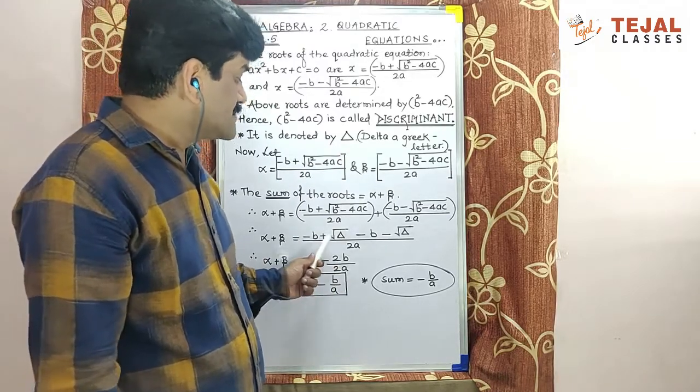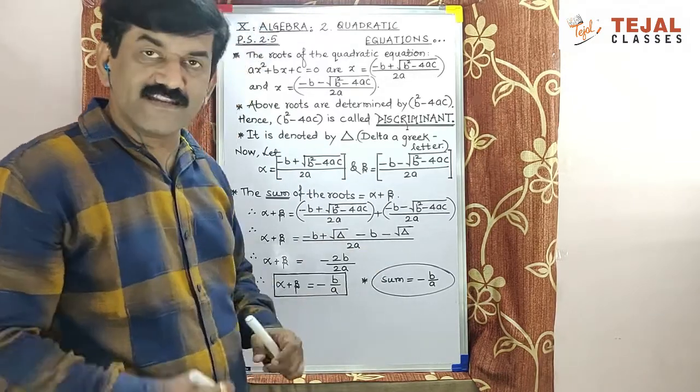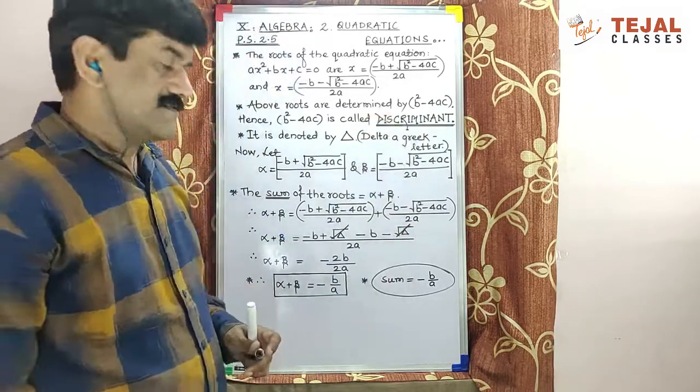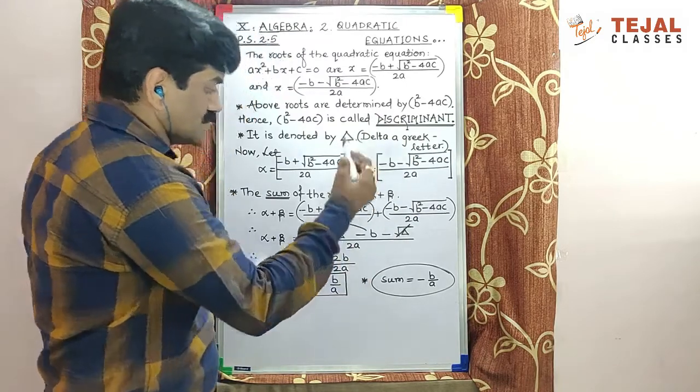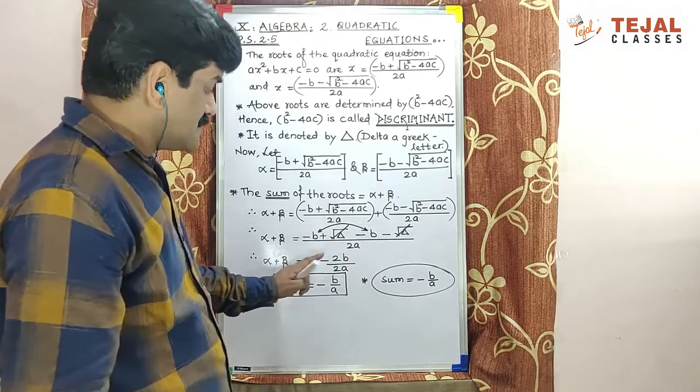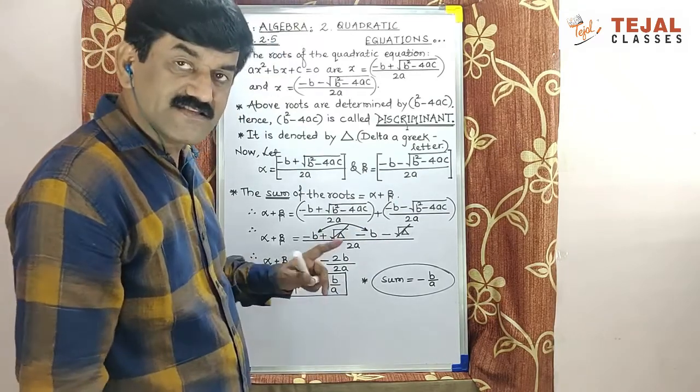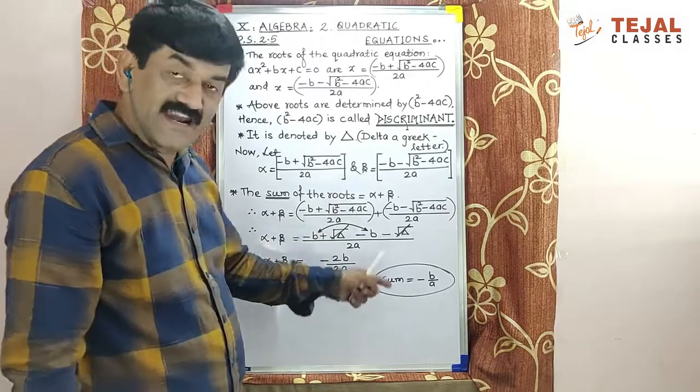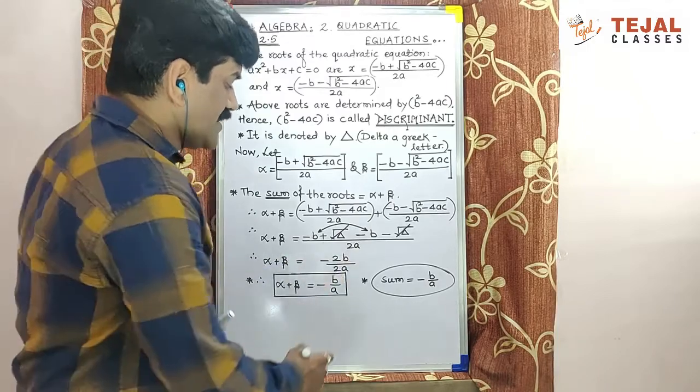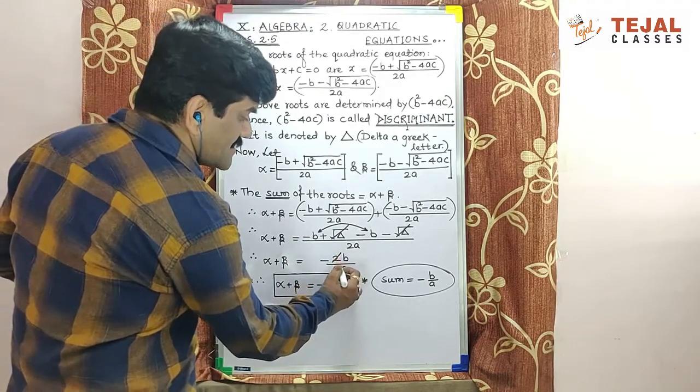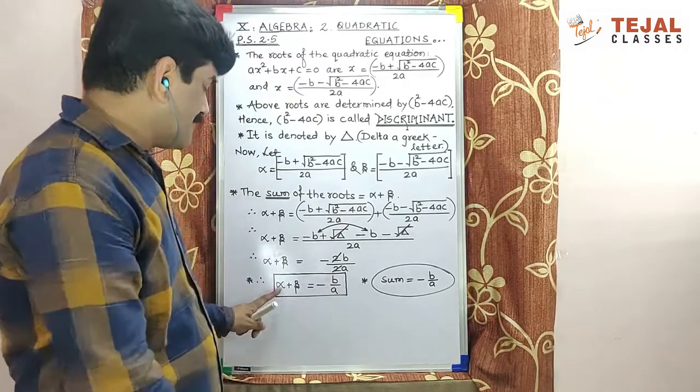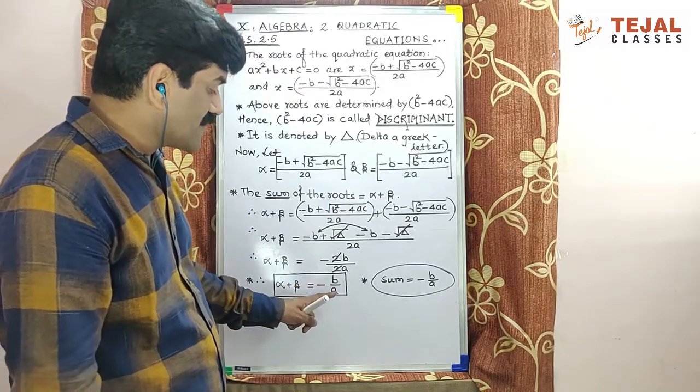And what is b²-4ac? Delta. So substitute delta here: this is +√Δ, this one is -√Δ. Can I cancel positive delta, negative delta? And what about this sum? This is -b, this one is also -b, so total sum is -2b. Denominator 2a. If 2 and 2 cancel, then what remains? α+β = -b/a.